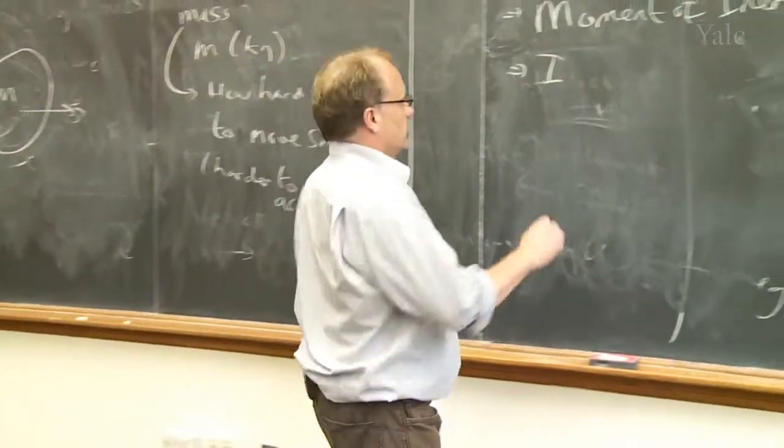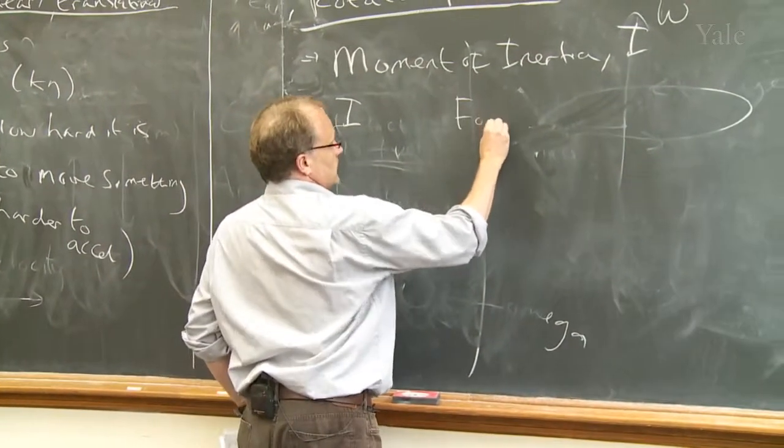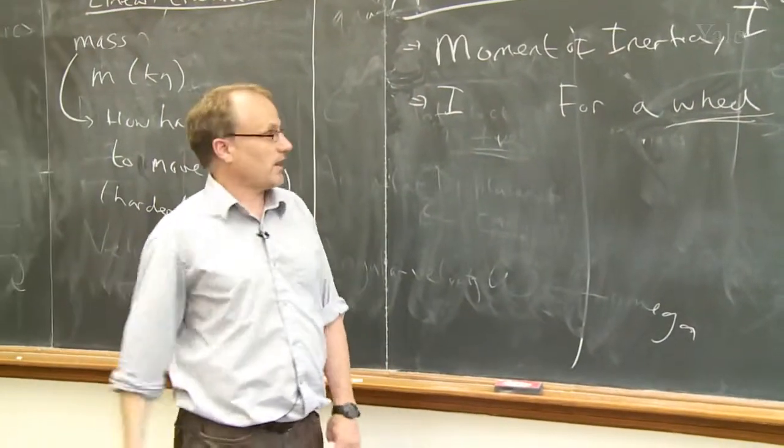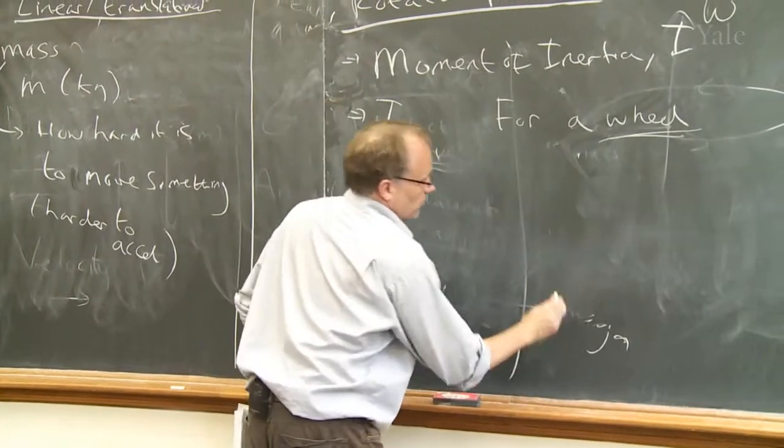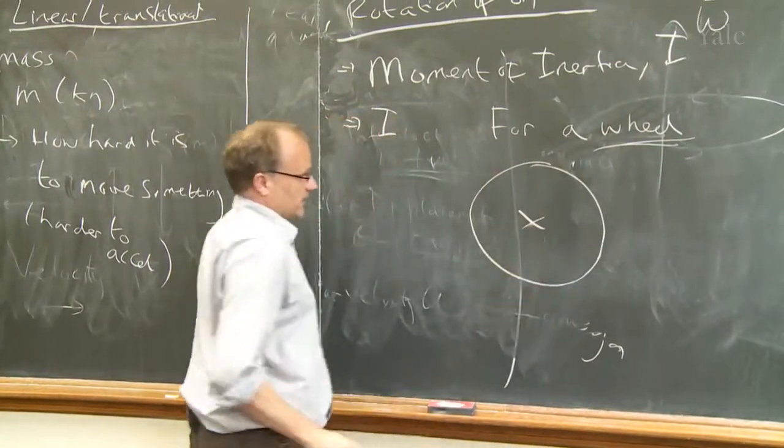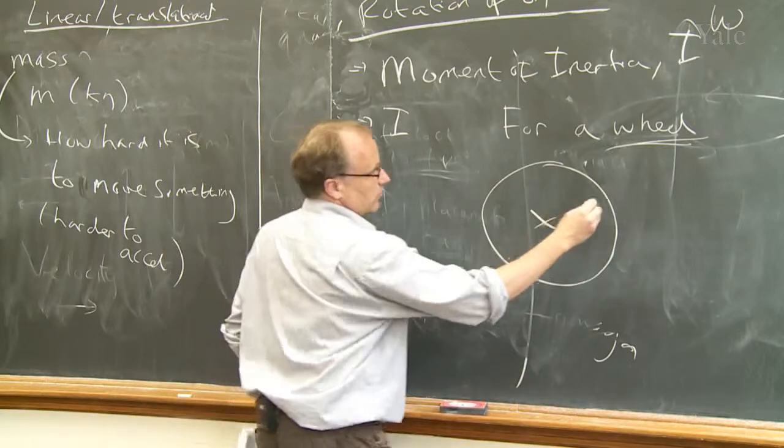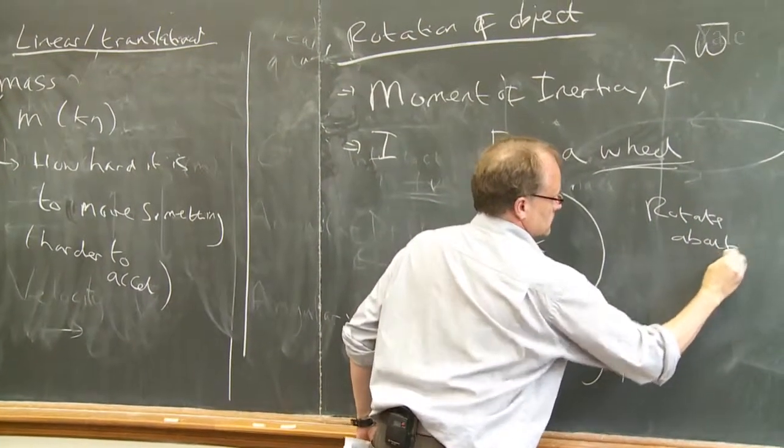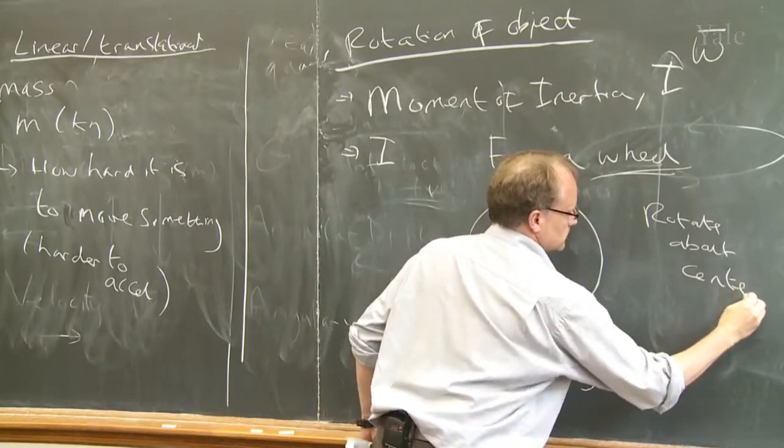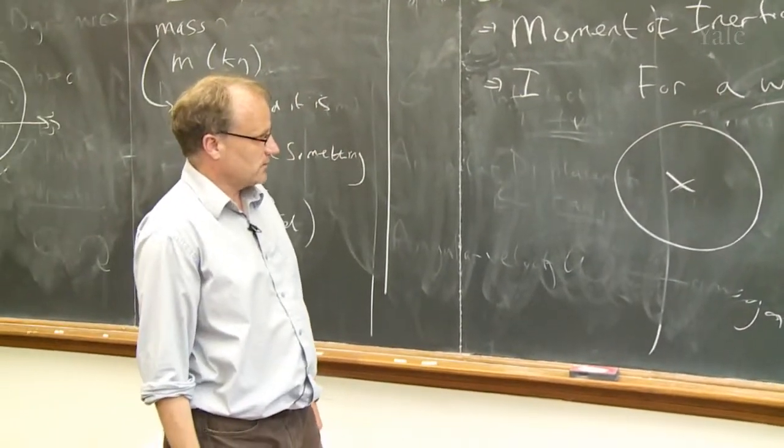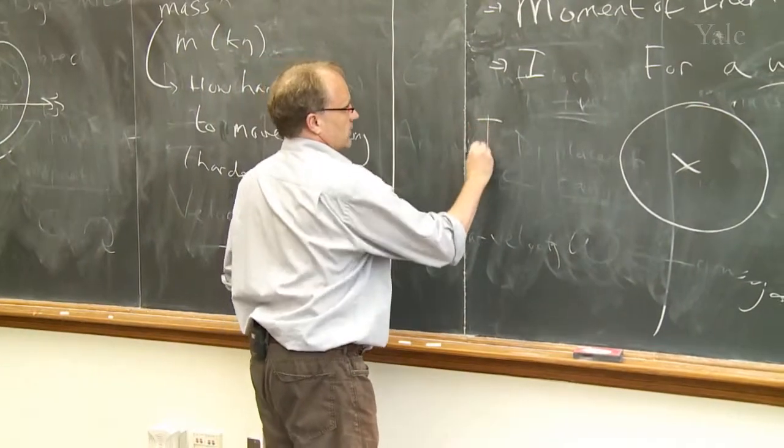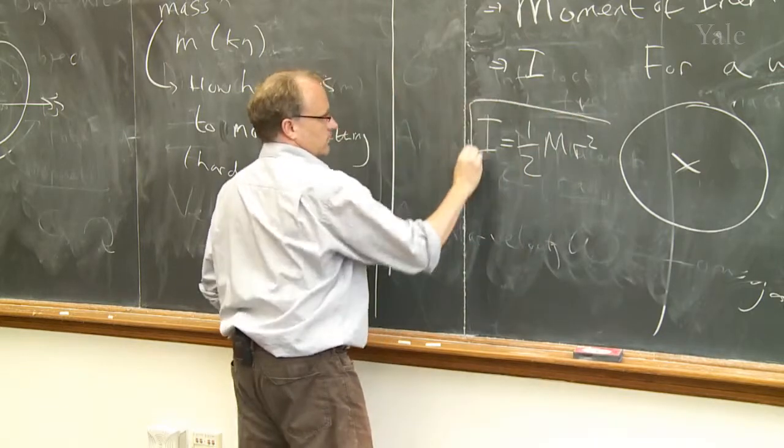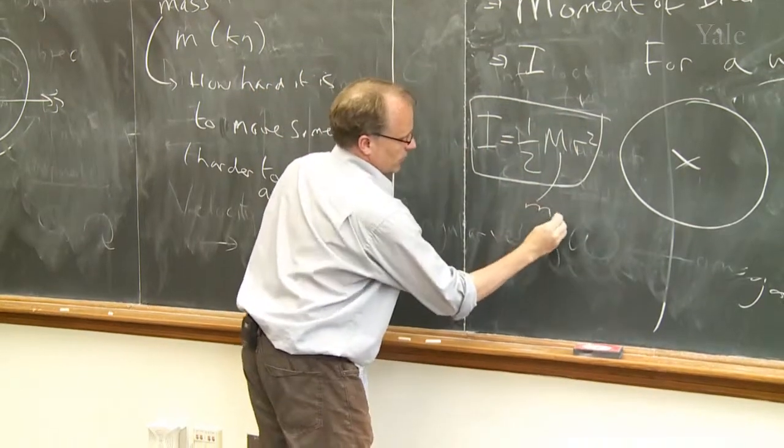So for example, for a wheel, if you rotate the wheel about the center, rotate about center, then I is equal to one half m r squared, where m is the mass of the wheel.